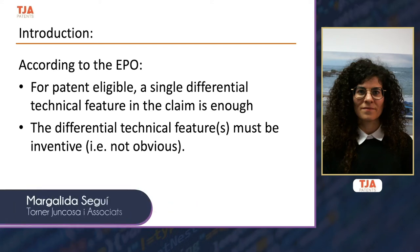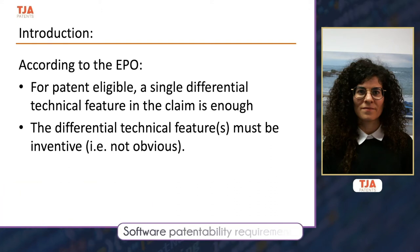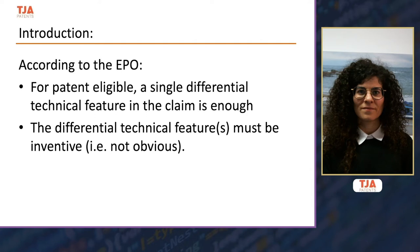In order for an invention to be patentable or patent eligible, you just need to have a differential technical feature in the claim, and that differential technical feature should provide a technical effect and not be obvious. Otherwise, the claim does not fulfill the novelty and inventive step requirements. That would be the main requisite that software patent inventions have to fulfill under EPO requirements.